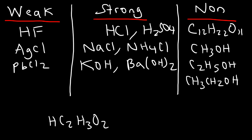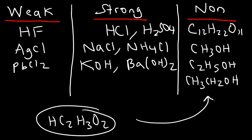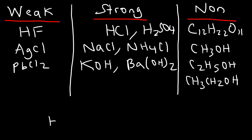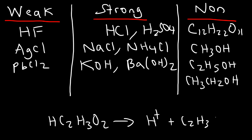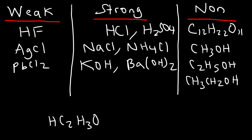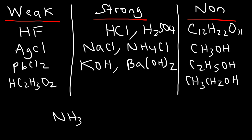What about acetic acid? It looks like a hydrocarbon with oxygen, but it's not a non-electrolyte — acetic acid is a weak acid, so it does ionize just a little. Only the hydrogen on the left is acidic; the other hydrogens are not. It partially ionizes: for every hundred molecules, maybe one might ionize into ions. So acetic acid, found in vinegar, is a weak electrolyte.